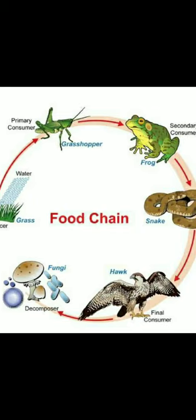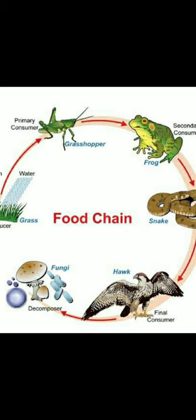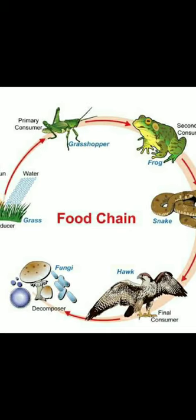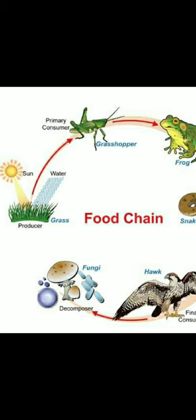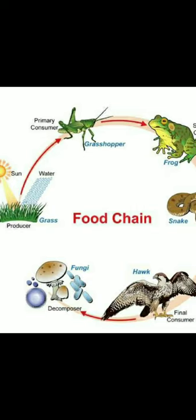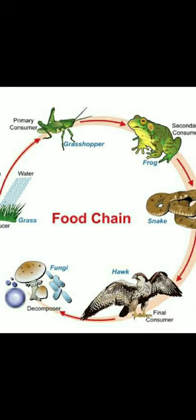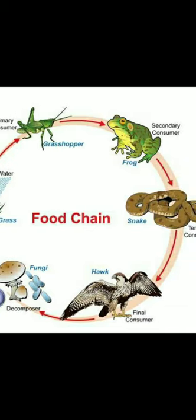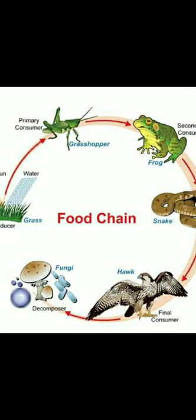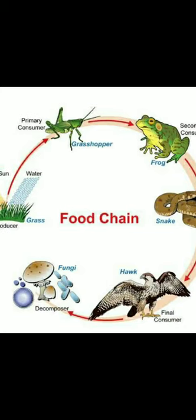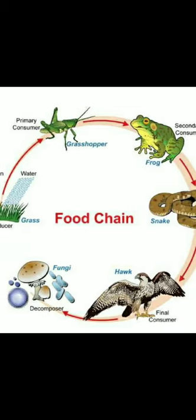Look at this food chain — interactions go on continuously between producers and the primary consumers, secondary consumers, tertiary consumers, and the final or top consumer. Interaction goes on continuously between producers, consumers, and saprophytes; fungi are the saprophytes. There is a definite sequence in this interaction which is called a food chain. Each chain consists of four or five links.